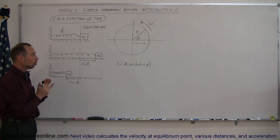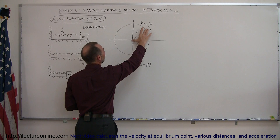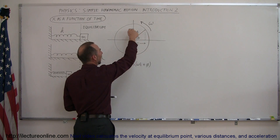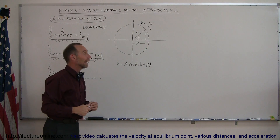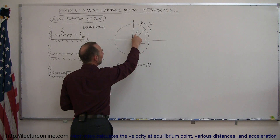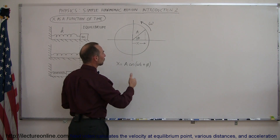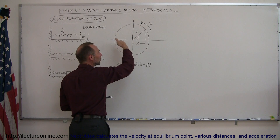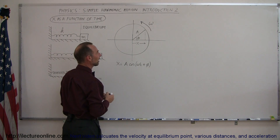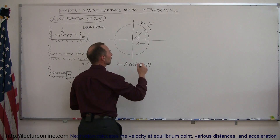We can liken that motion to the x-coordinate of a phasor diagram. If we have a phasor of length a — corresponding to the amplitude — rotating in a circle at angular velocity omega, then the distance x will always be a times the cosine of angle theta. If we want to know how x changes as a function of time, we write x equals a cosine of omega t plus the phase angle.